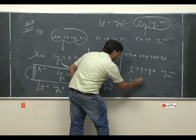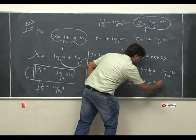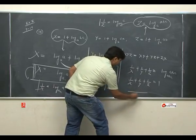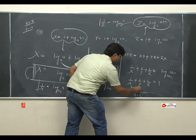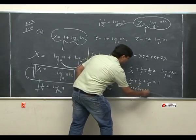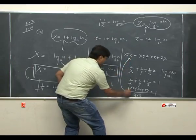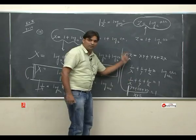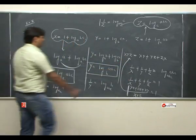अब LCM लेंगे: LCM = xyz, तो (yz + zx + xy) / xyz = 1. Cross multiply करो: yz + zx + xy = xyz. यही हमें prove करना था — xyz = xy + yz + zx. Hence proved.